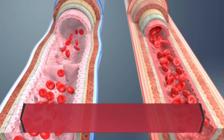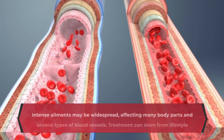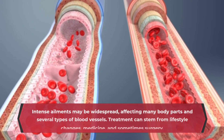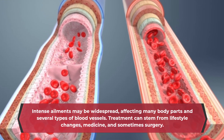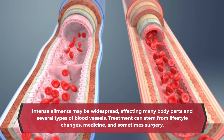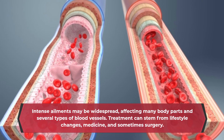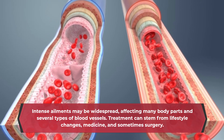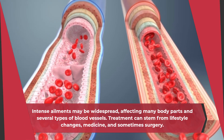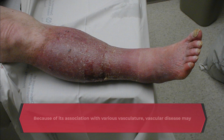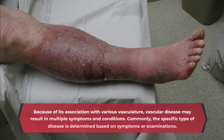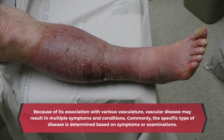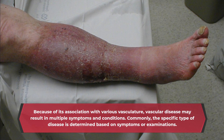Intense ailments may be widespread, affecting many body parts and several types of blood vessels. Treatment can stem from lifestyle changes, medicine, and sometimes surgery. Because of its association with various vasculature, vascular disease may result in multiple symptoms and conditions.